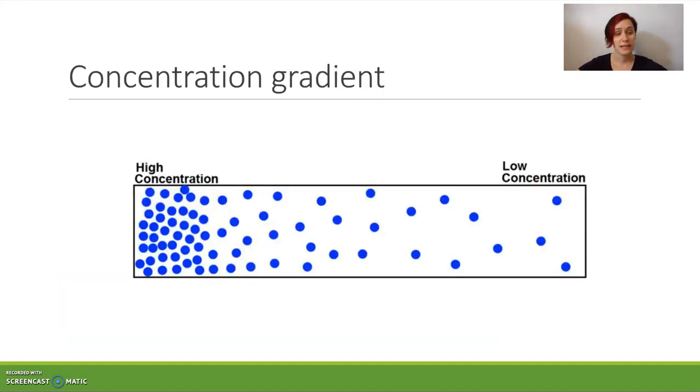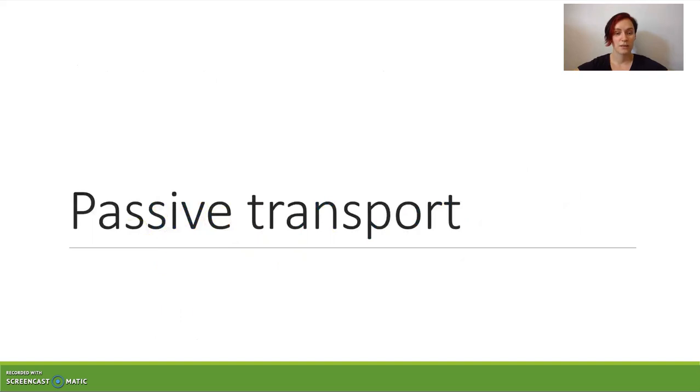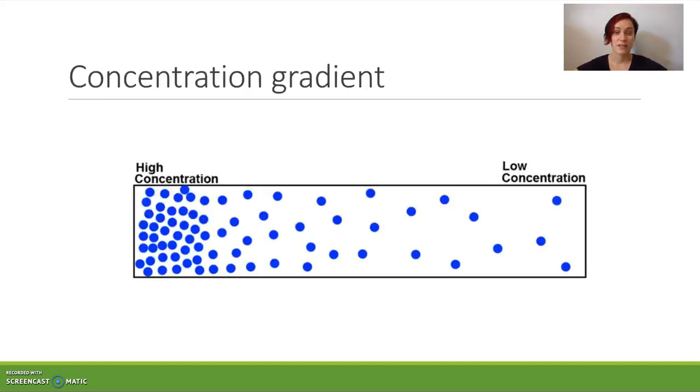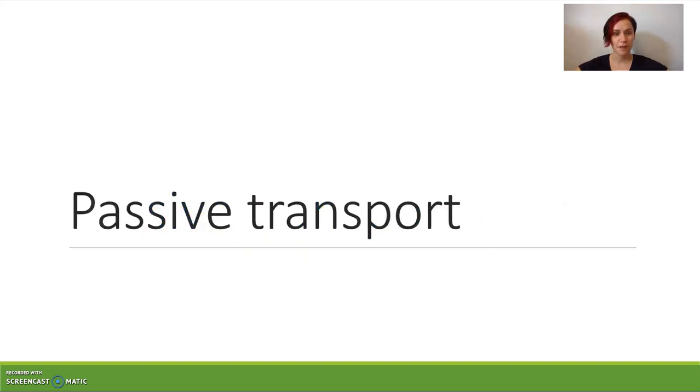So to start with, we need to understand what the concentration gradient is. And that's that distribution of particles across a space from high concentration to low concentration. And that's pretty much what you have to picture in your mind when you think, something is spreading out into the space that's available.